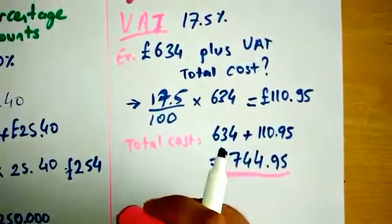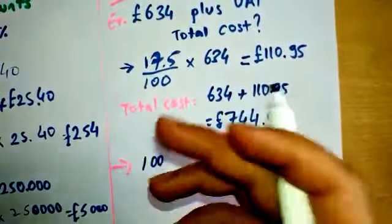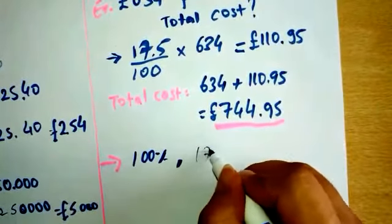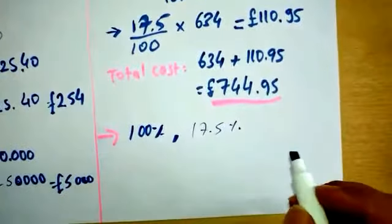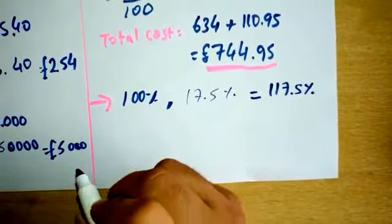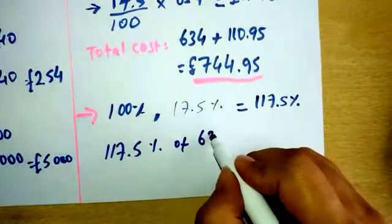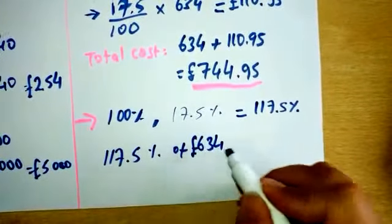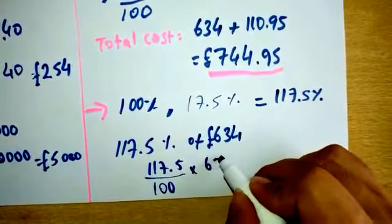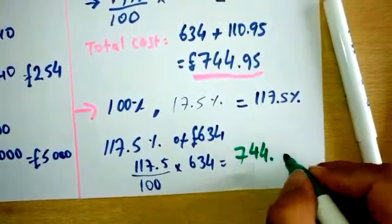Or instead of thinking in that way, you can think in another way. Let's say the total cost is 100% - the price plus 17.5%. We can think together as 117.5%. So we can straight away calculate 117.5% of £634. We can write this as 117.5% out of 100 times £634, and you will get exactly the same amount, £744.95.